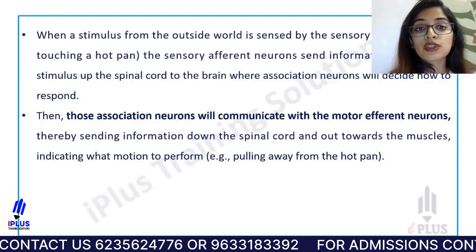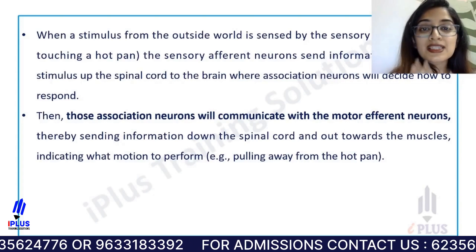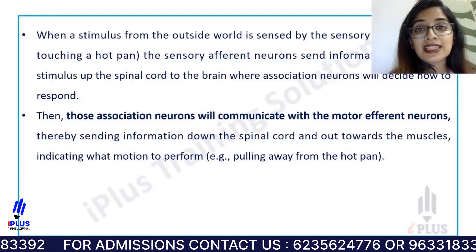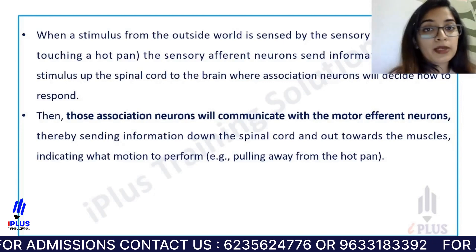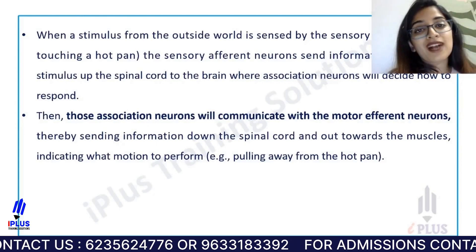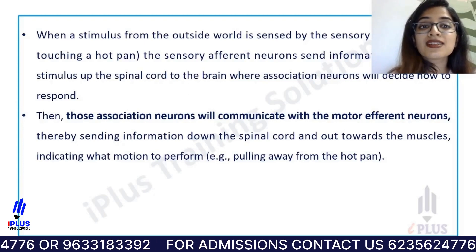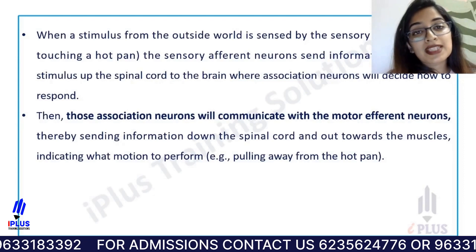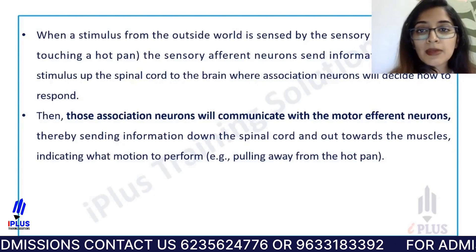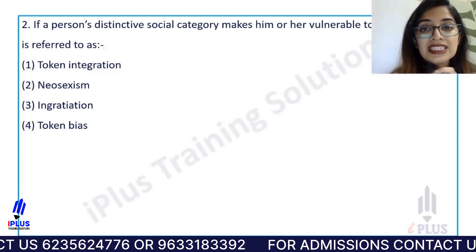The information is sent via the spinal cord to the brain, and the brain decides how to respond. Mostly our response is taking our hand away from that thing. Afferent neurons pass information from the outside world — whether sensed through the eye as vision, smell, taste, or hearing.